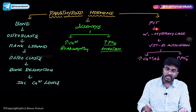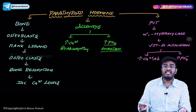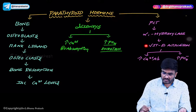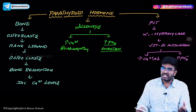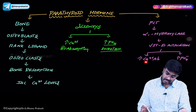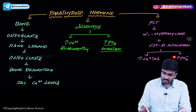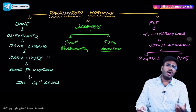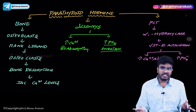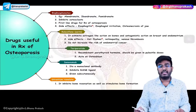So whenever PTH is present, alpha-1 hydroxylase is activated and converts inactive vitamin D into active vitamin D, which is calcitriol or 1,25-dihydroxycalciferol. Active vitamin D then goes to the gut mucosa, where it increases absorption of both calcium and phosphates. Vitamin D also acts on the nephrons and increases reabsorption of calcium.